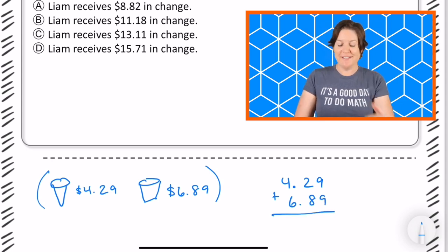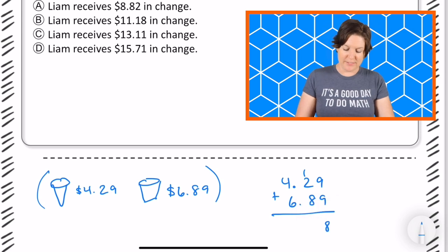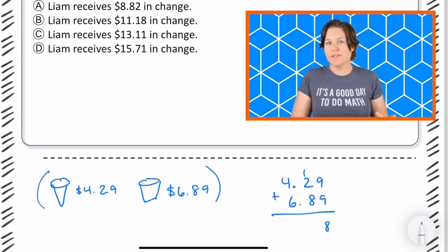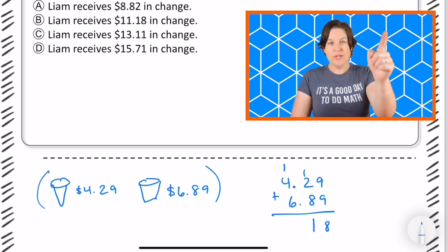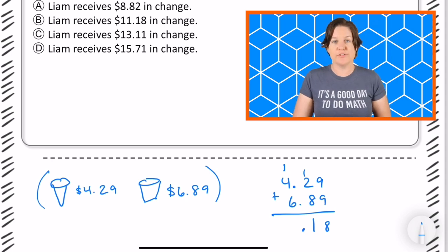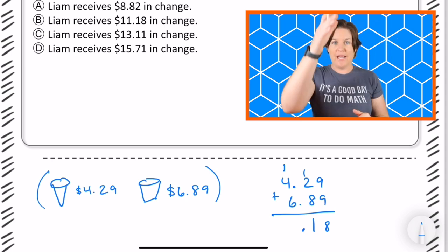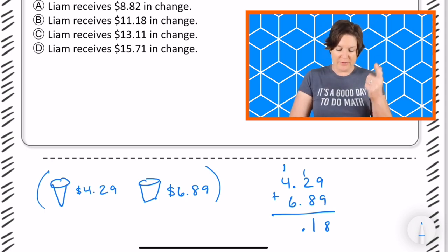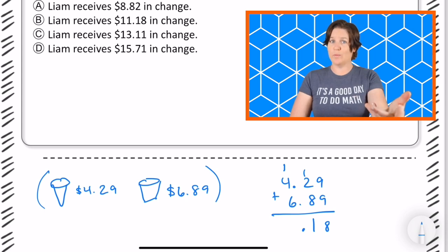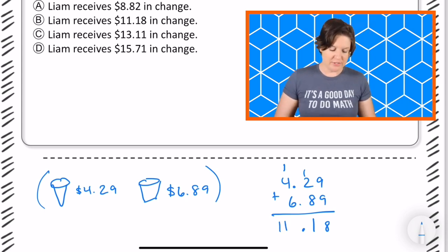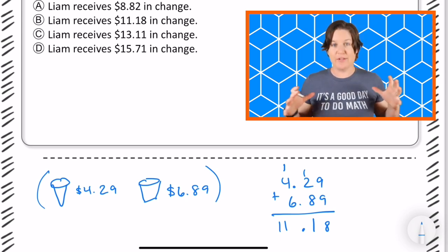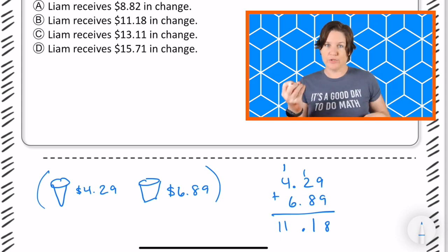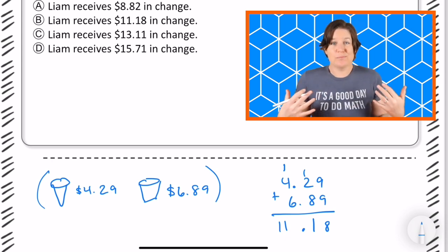9 plus 9 is 18. 2 plus 8 equals 10 plus 1 would be 11. Don't forget to drop down your decimal here. When we add or subtract with decimals, we need to line them up and then drop our decimal down. And then we have 6 plus 4 equals 10 plus 1 would be 11. So we have $11.18, which is an answer choice. And if I were to stop there and select that one, I would be wrong because this is the amount that it would cost for the cone and for the milkshake. But now we need to subtract it from what? From the $20.